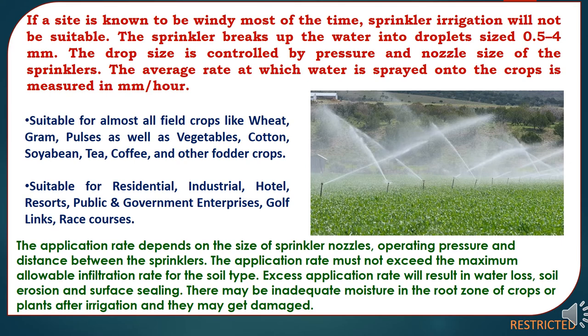Sprinkler irrigation is suitable for almost all field crops like wheat, gram, pulses, vegetables, cotton, soybean, tea, coffee, and other fodder crops. It is also suitable for residential, industrial, hotel, resort, public and government enterprises, golf links, and race courses. However, if a site is known to be windy most of the time, sprinkler irrigation will not be suitable. The application rate depends on the size of sprinkler nozzles, operating pressure, and distance between the sprinklers. The application rate must not exceed the maximum allowable infiltration rate for the soil type; excess application rate will result in water loss, soil erosion, and surface sealing, leading to inadequate moisture in the root zone and possible crop damage.